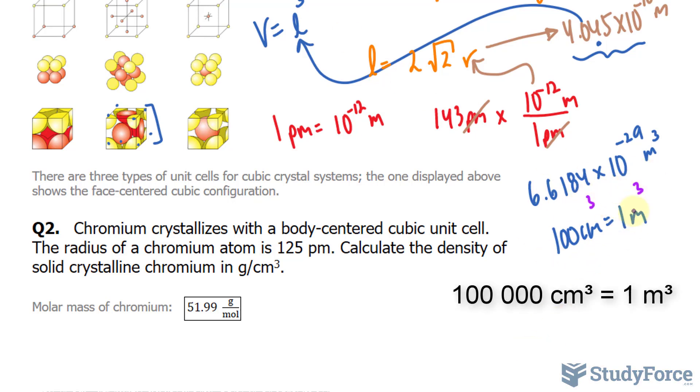If you convert this into centimeters cubed using this conversion factor, you should end up with 6.6184 times 10 to the power of negative 23 centimeters cubed.